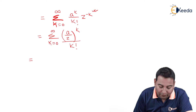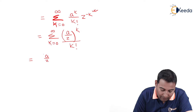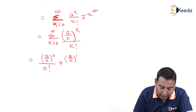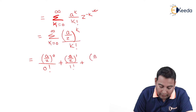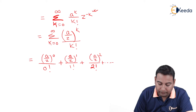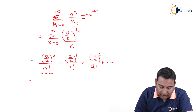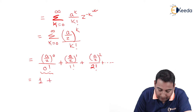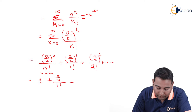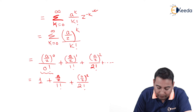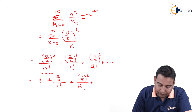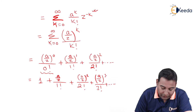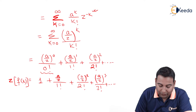Let's substitute the values. If k=0: (a/z)^0 upon 0! = 1. Then k=1: (a/z)^1 upon 1!. Then k=2: (a/z)^2 upon 2! and so on. This gives us: 1 + (a/z)/1! + (a/z)^2/2! + (a/z)^3/3! + dot dot dot. Can you identify this series from this expression?